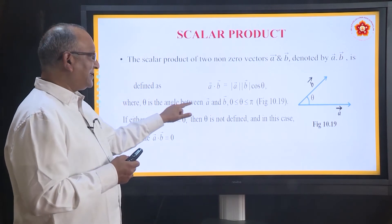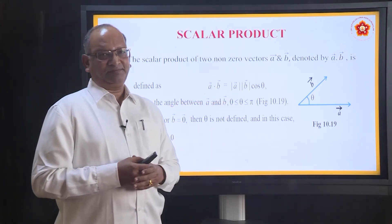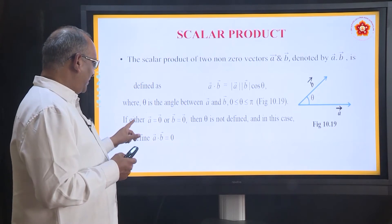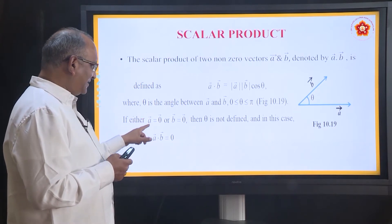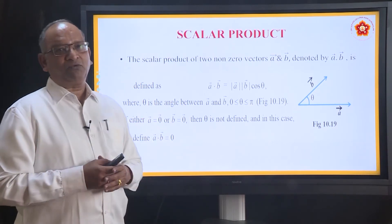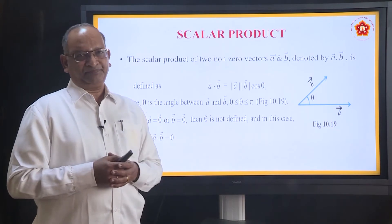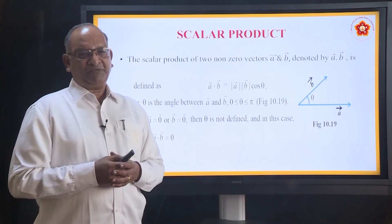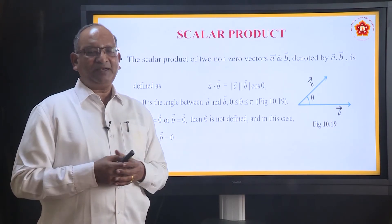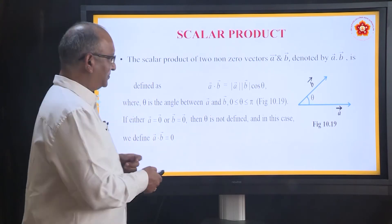Here theta is the angle between 0 and pi. Now if either A equals zero or B equals zero, the product becomes zero. If any one of them is a zero vector, the product is going to be zero.